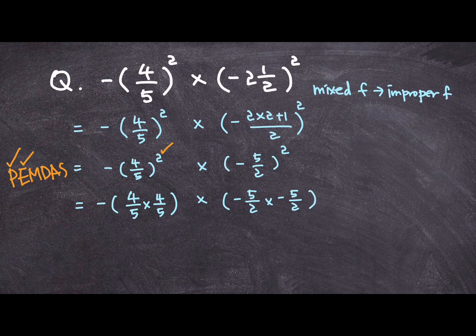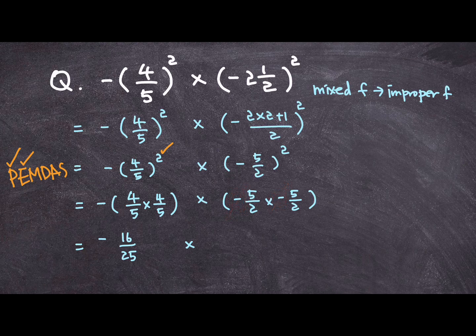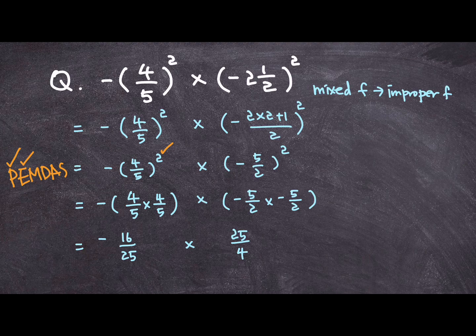Okay. So, I have negative 16 over 25 multiplied by negative, negative gets canceled down, and I get 25 over 4. Now, if I multiply these two fractions, I can cross cancel these numbers, and also these numbers, and end up with 1, 1, 4, 1.